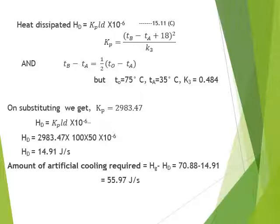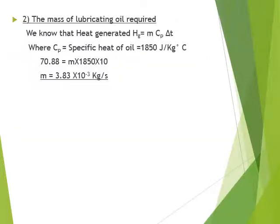The value 0.484 is also available in the data handbook. Substituting all values, KP comes out to approximately 3.47, and heat dissipated HD = 14.91 J/s. Therefore, the amount of artificial cooling required is Hg − HD = 55.97 J/s, as shown in the slide.